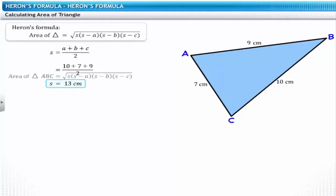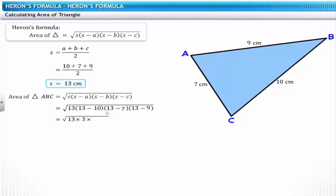Next, let's substitute the values of the semi-perimeter and the lengths of the sides of the triangle in the formula. On simplification, we get the area of the triangle as 30.59 square centimeters.